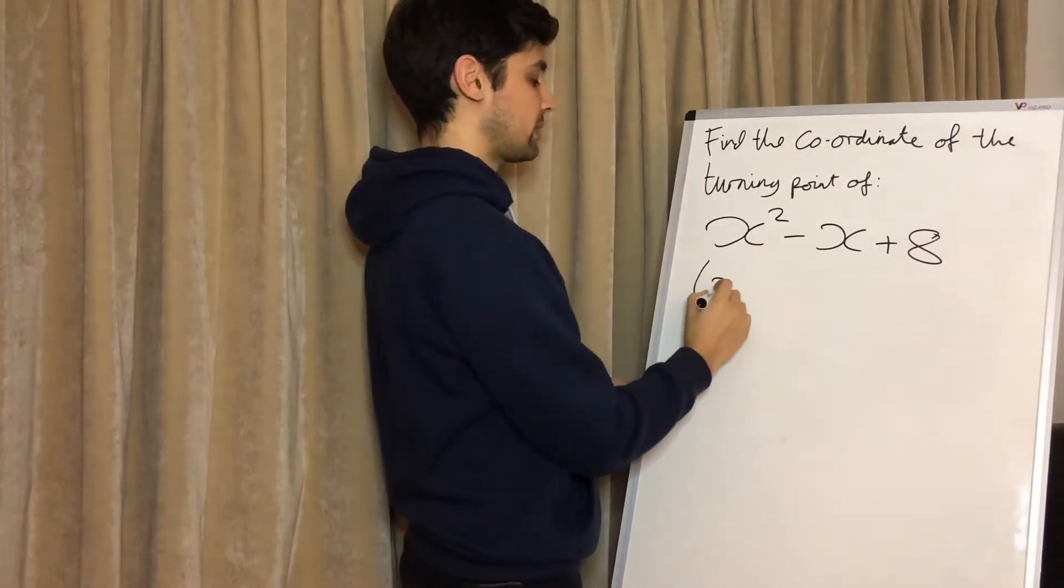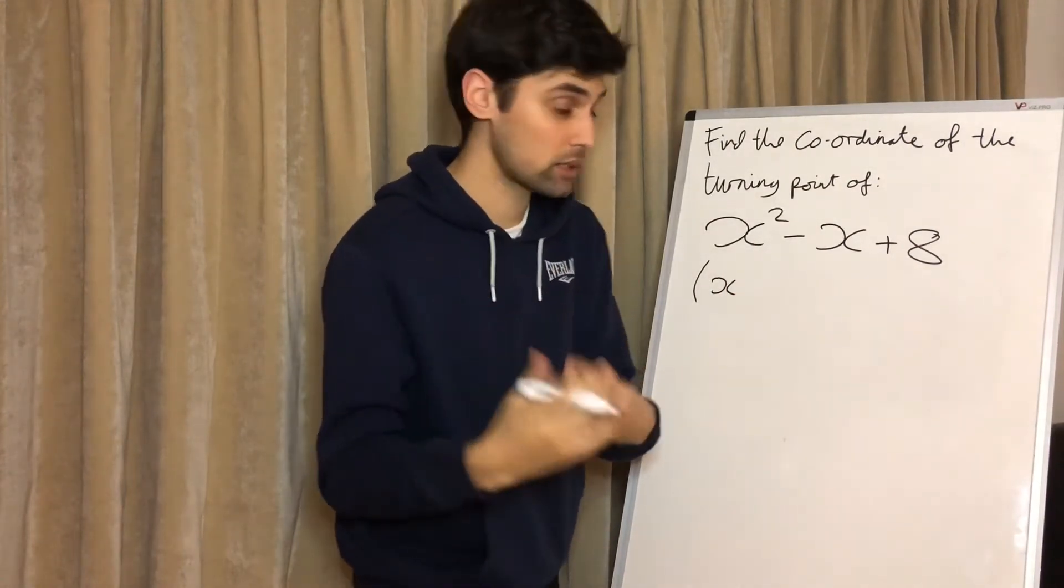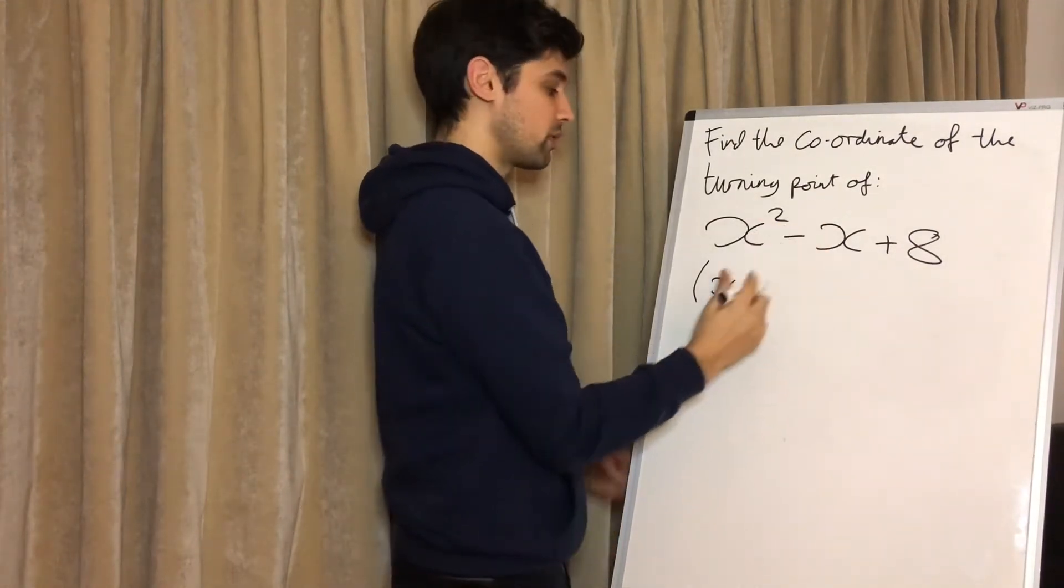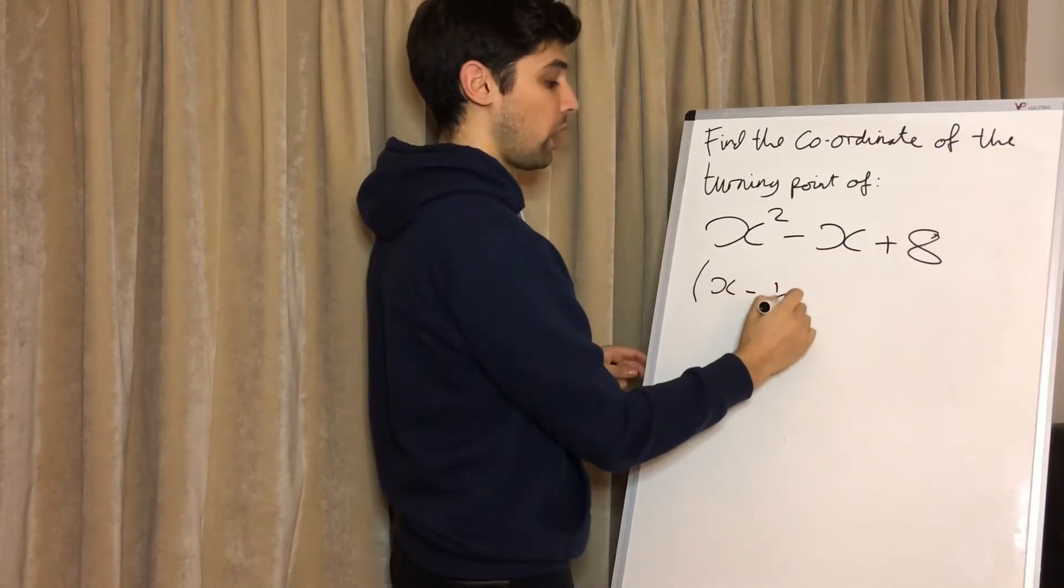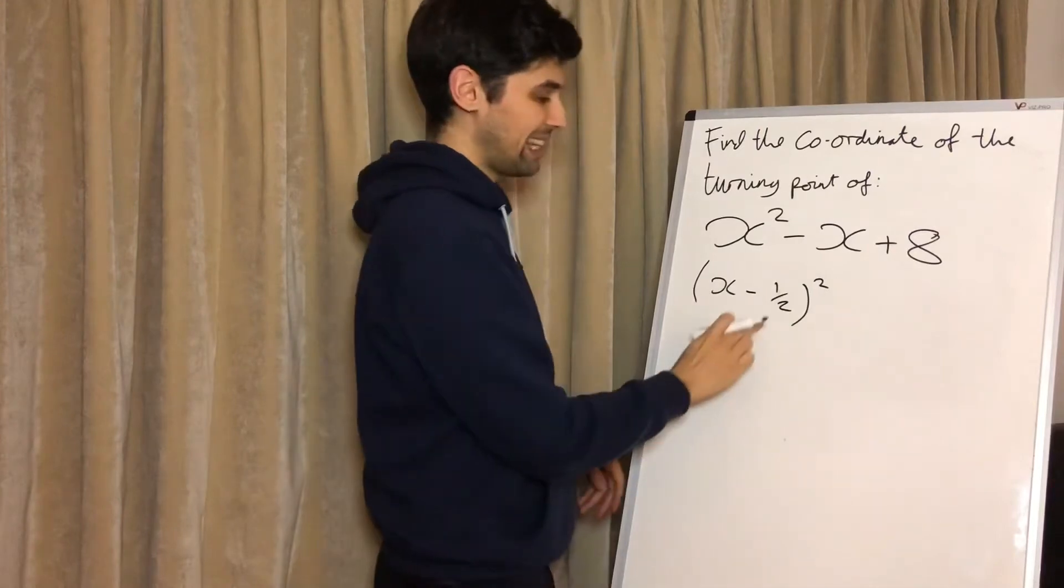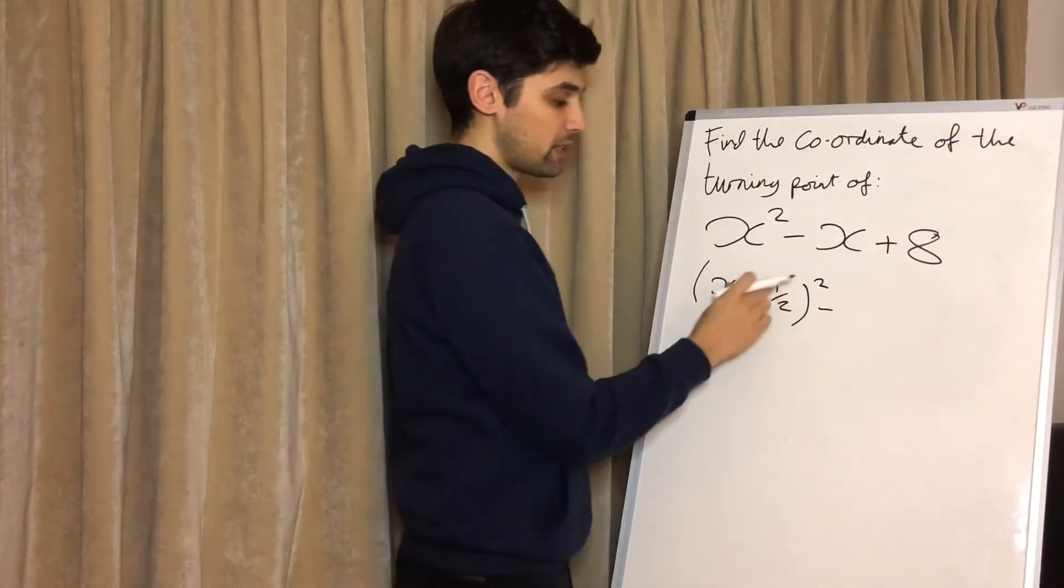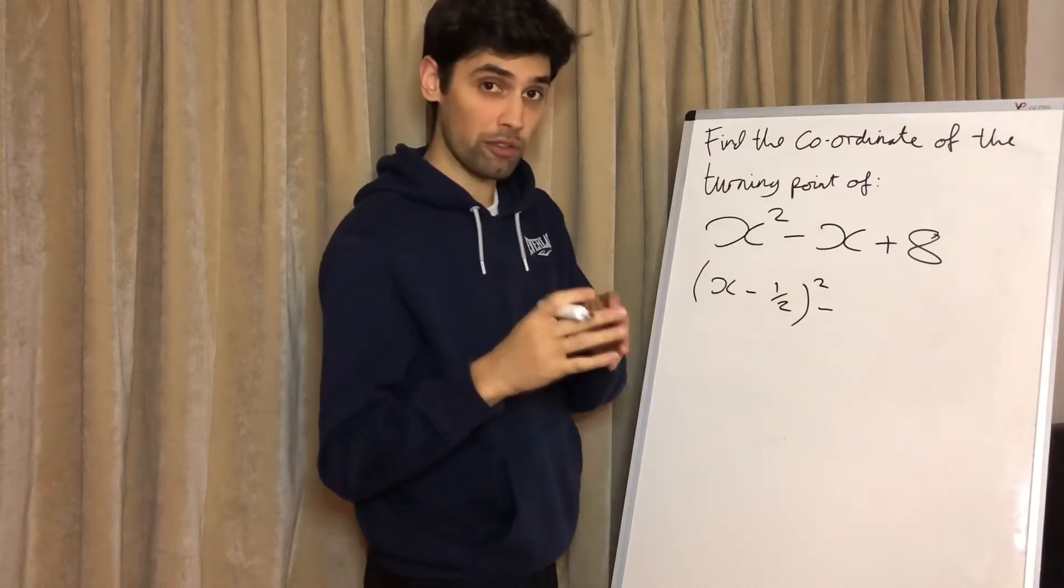We bring the x down and half of this number. Now it says minus x, but we know that is minus one x. So half of the number in front will be minus a half, squared. Then we minus this number squared. So it's always going to be minus this number squared. A half times a half is a quarter.